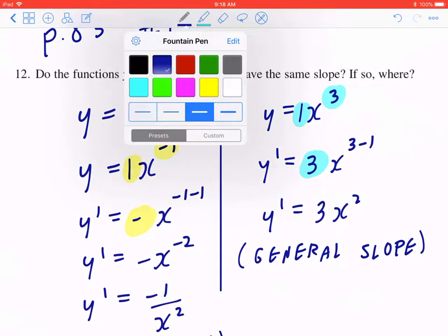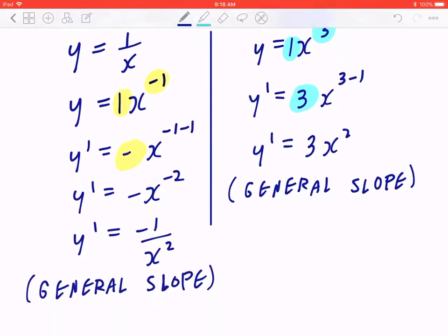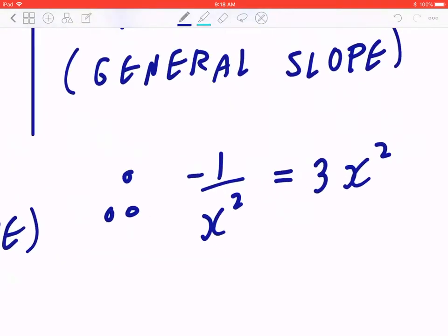Now, they're really asking if these functions have the same slope. If they do have the same slope, that means you can make the two general slopes equal, and you can solve for x for the location. Therefore, negative 1 over x squared equals to 3x squared. If they do have the same slope, you can find x. If you cannot find x, they do not have the same slope.